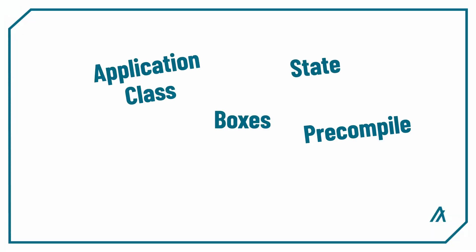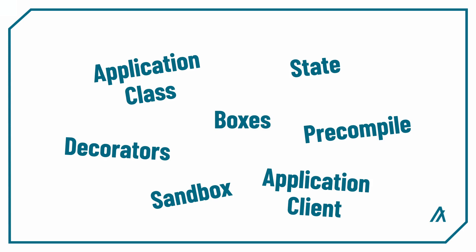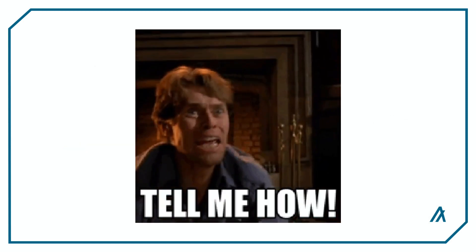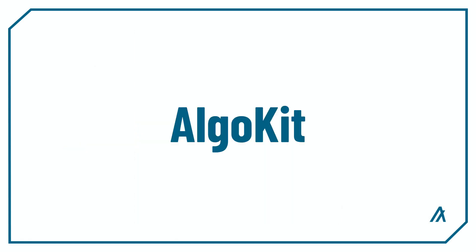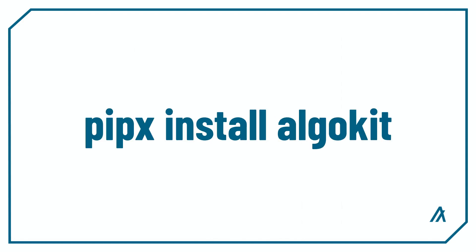Throughout the Master Beaker series, I'm going to dive into all of the components of the Beaker framework and explain how you would use them when writing Algorand smart contracts. So how can you get started building with Beaker? The first thing you want to do is install AlgoKit. To do that, all you need to do is run pipx install AlgoKit in your terminal.